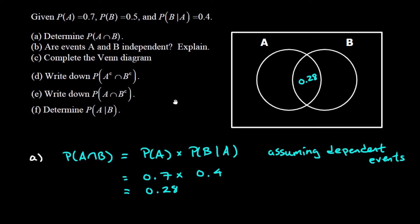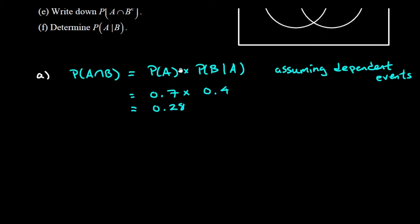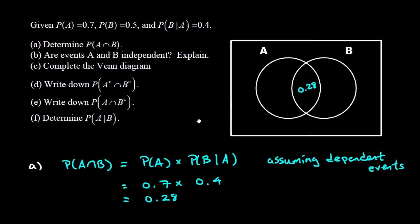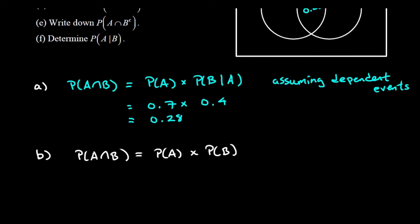Part B is asking us to be clear: are events A and B independent, and explain. There are two ways to do it. Using the definition of independence first — if we have independent events, we should be able to just write down the two probabilities in isolation and get the correct intersection. So P(A) is 0.7 and P(B) is 0.5, giving 0.7 multiplied by 0.5. But my original calculation was 0.7 times 0.4, so if A and B were independent the probability of A and B should have been 0.35 or 35 percent.